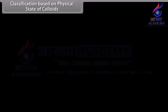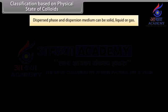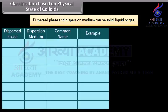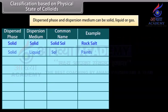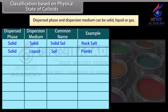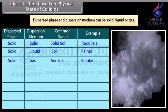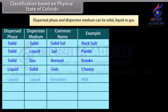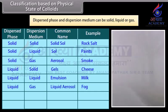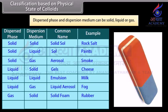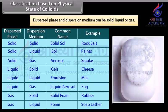Classification based on physical state of colloids. The dispersed phase and dispersion medium can be solid, liquid, or gas; therefore, eight types of colloidal systems are possible. Rock salt is an example of solid sol; paint is an example of sol; smoke is an example of aerosol; cheese is an example of gel; milk is an example of emulsion; fog is an example of liquid aerosol; rubber is an example of solid foam; soap lather is an example of foam.